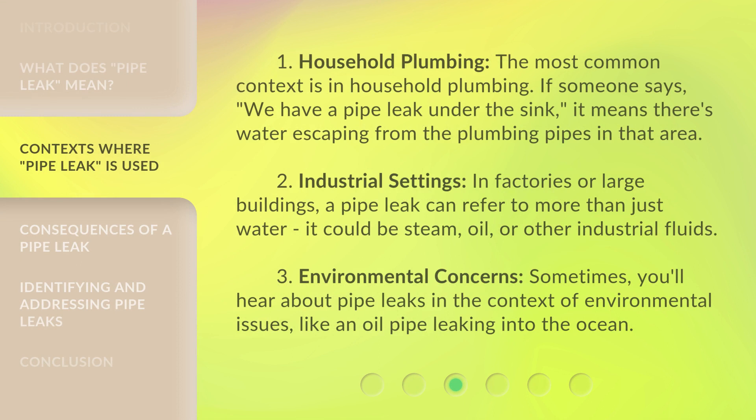1. Household Plumbing: The most common context is in household plumbing. If someone says, we have a pipe leak under the sink, it means there's water escaping from the plumbing pipes in that area. 2. Industrial Settings: In factories or large buildings, a pipe leak can refer to more than just water — it could be steam, oil, or other industrial fluids. 3. Environmental Concerns: Sometimes, you'll hear about pipe leaks in the context of environmental issues, like an oil pipe leaking into the ocean.